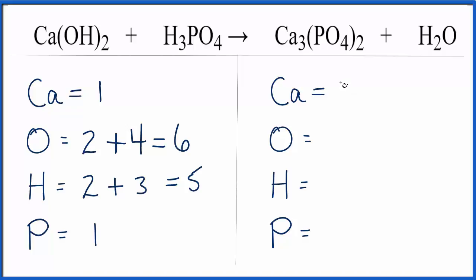Over on the product side, we have the three calciums, the two times the four oxygens, that's eight oxygens, plus we have one oxygen here. So we have nine oxygens. Hydrogens, we have two. And then the phosphorus, two times the one phosphorus, we have two of those.